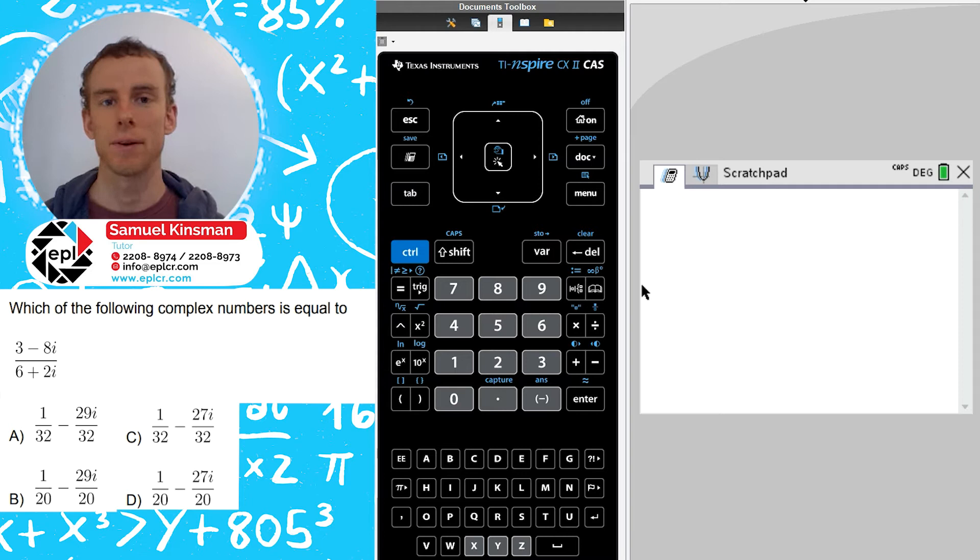That's exactly what we have in the practice question on the left. Notice that the fraction we're given has an i in the denominator, and all of the answer choices don't have an i in the denominator. So what we have to do here is rationalize, and the calculator can do this for you.